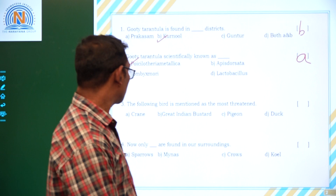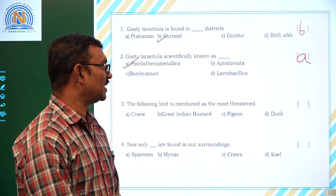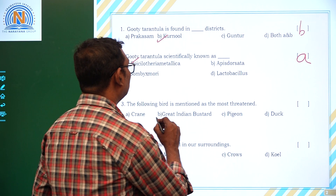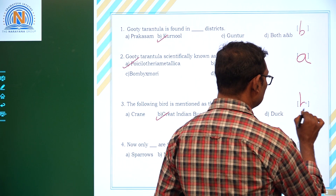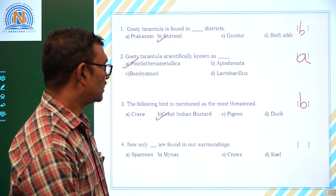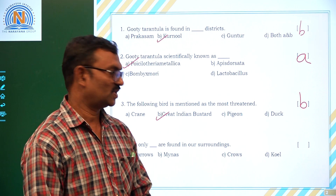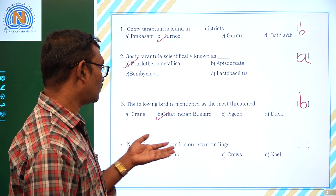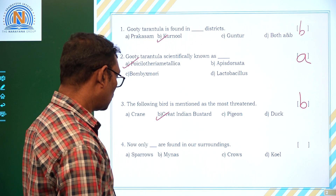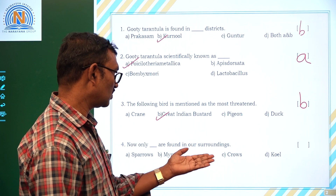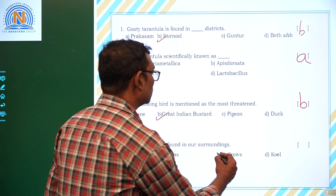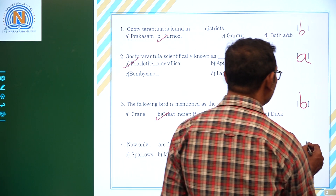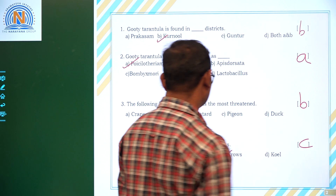The following bird is mentioned as the most threatened. The answer is Great Indian Bustard. Great Indian Bustard is in a dangerous situation. Now only certain birds are found in our surroundings — we can only see crows; we can't see sparrows or mynas. So the answer is Option C.